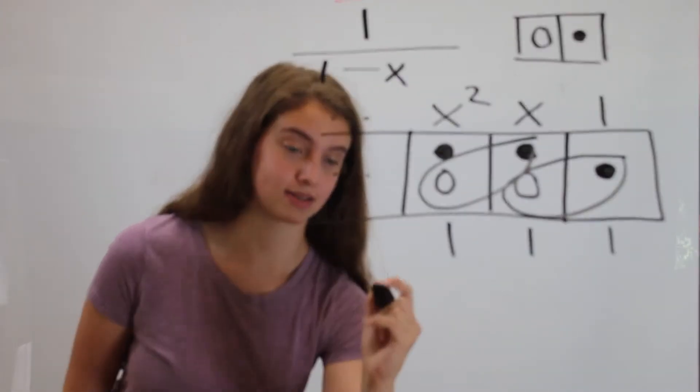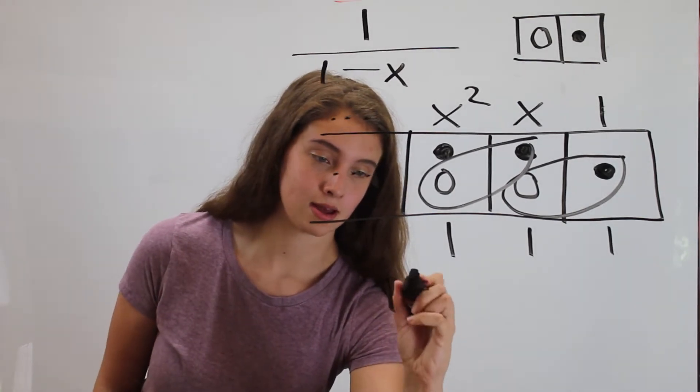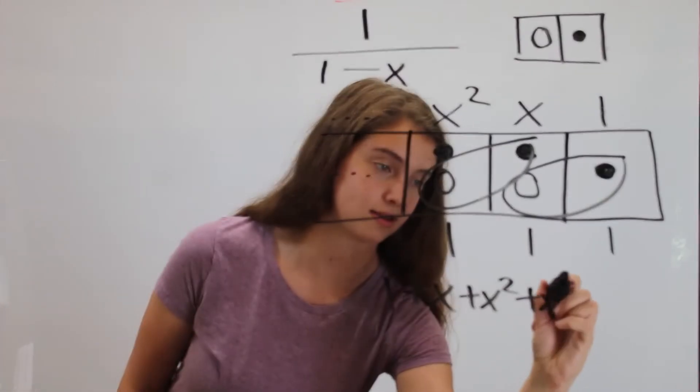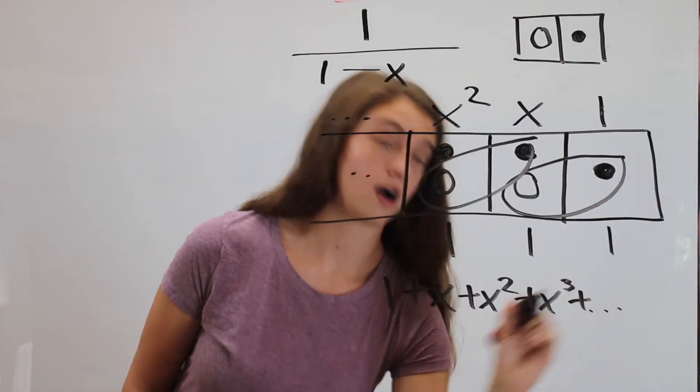So when we actually write it out, it looks like this. One plus x, plus x squared, plus x cubed, on forever.